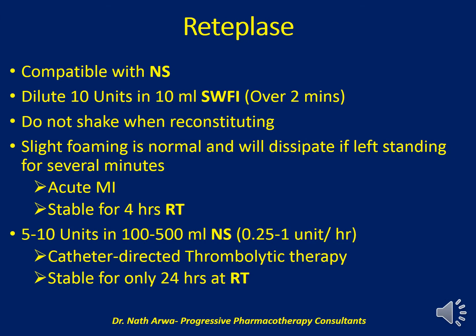Reteplase is compatible with normal saline — avoid using 5% dextrose in water. 10 units should be dissolved in 10 ml of sterile water for injection, homogenized, and administered over 2 minutes. Do not shake when reconstituting because of foaming; slight foaming is normal and will dissipate if left standing for several minutes. Such a solution is stable for 4 hours at room temperature. For catheter-directed thrombolytic therapy, dilute 5 to 10 units to 500 ml of normal saline and infuse at 0.25 to 1 unit per hour; stable for 24 hours at room temperature.